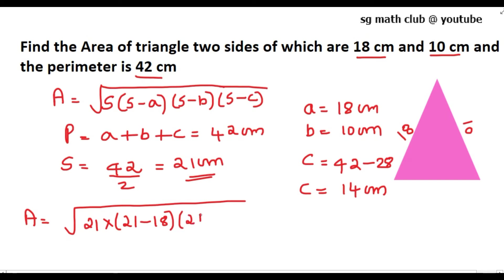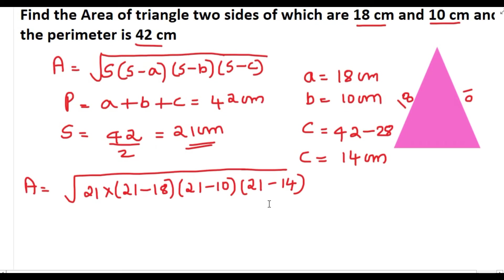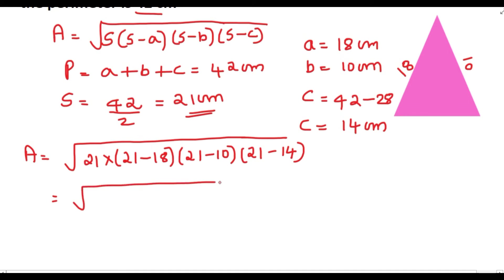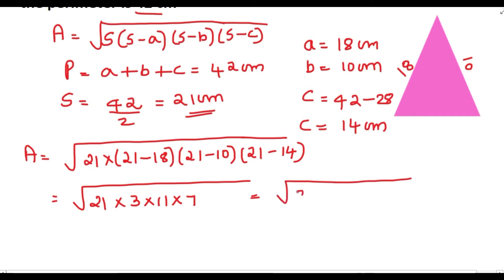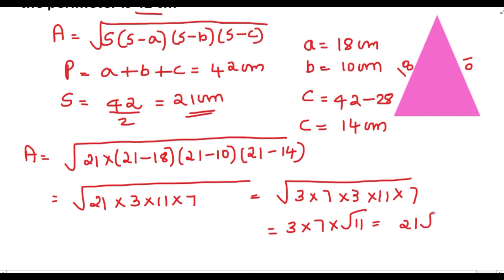We substitute into the formula: √(21 × (21 − 18) × (21 − 10) × (21 − 14)) = √(21 × 3 × 11 × 7). Writing 21 as 3 × 7, we get √(3 × 7 × 3 × 11 × 7). Taking 3 and 7 outside gives 21√11 square centimeters. The area of the triangle is 21√11 cm².